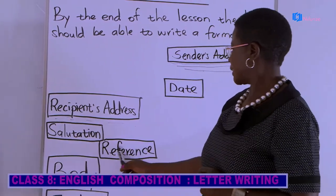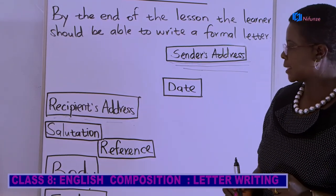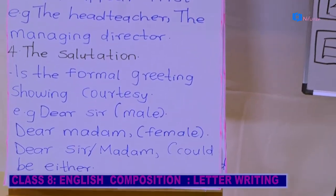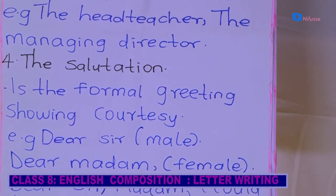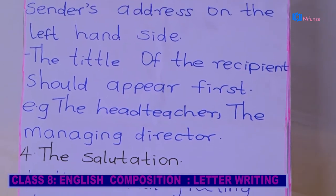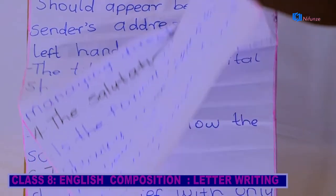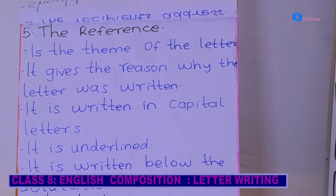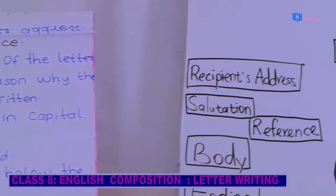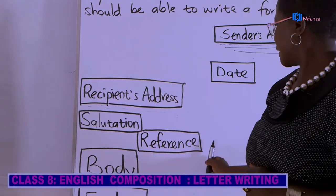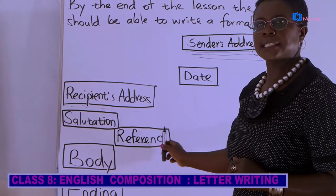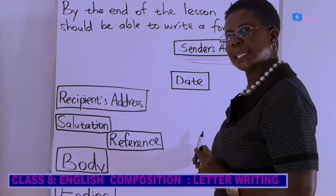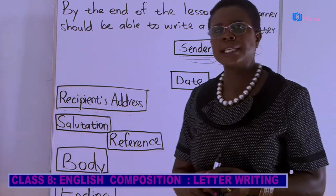After the salutation, you write the reference of the letter. The reference is the title of the letter — it tells the reader what the letter is about. For example, if you are asking for an apology from your teacher, you write: 'RE: APOLOGY.' The reference must be written in capital letters and underlined with a ruler.